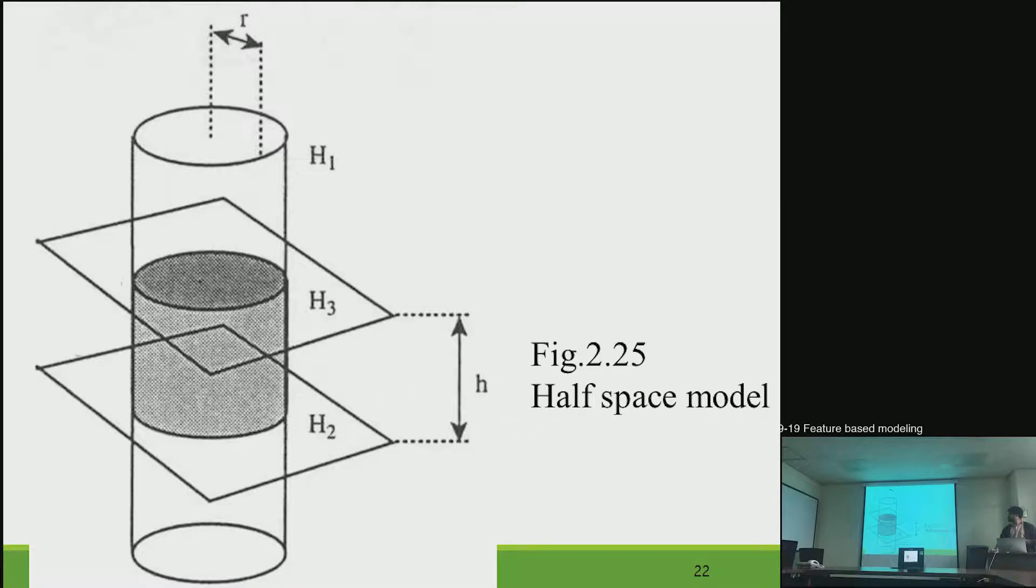First is the half-space model. Half-space is basically a mathematical term which is based on the analytical functions. On this basis, more complex, on the basis of half-space, like in this example, there are two planar half-spaces and one cylindrical half-space.